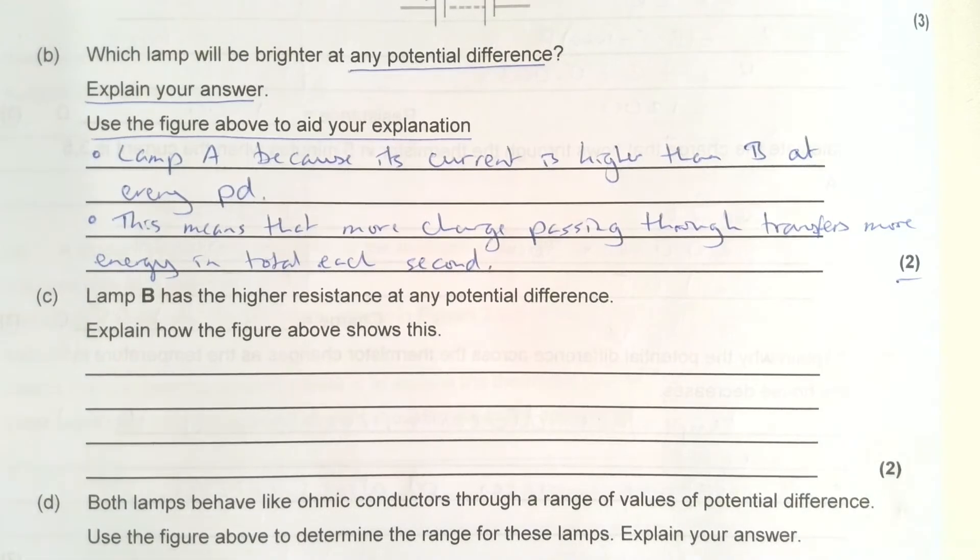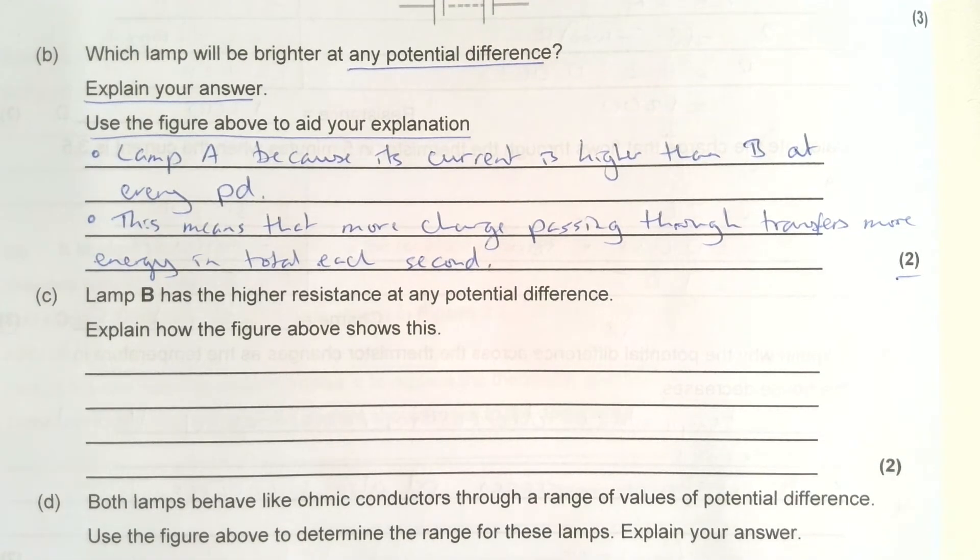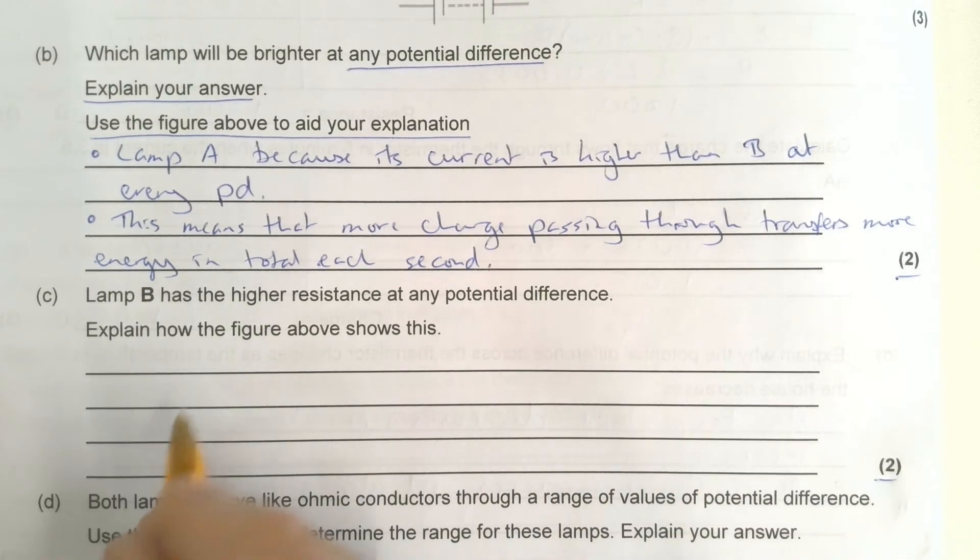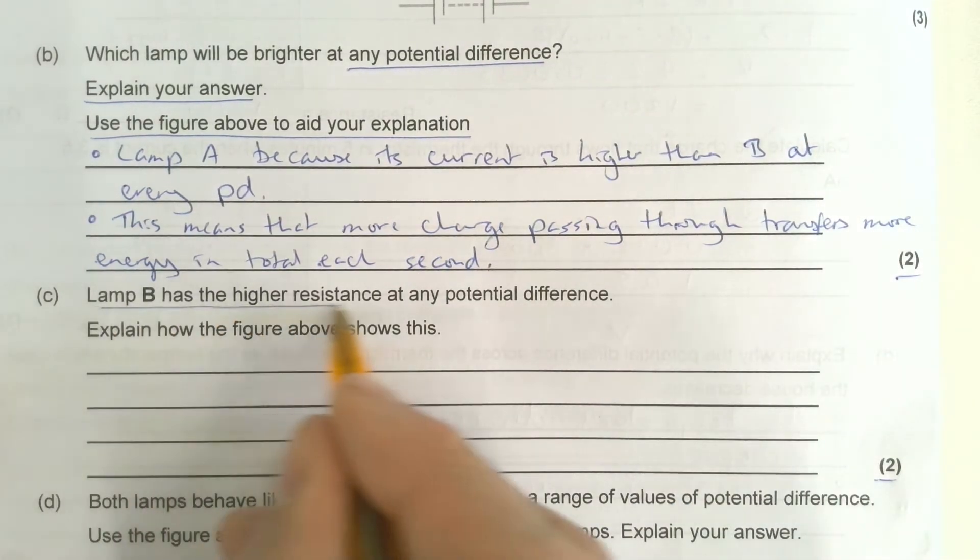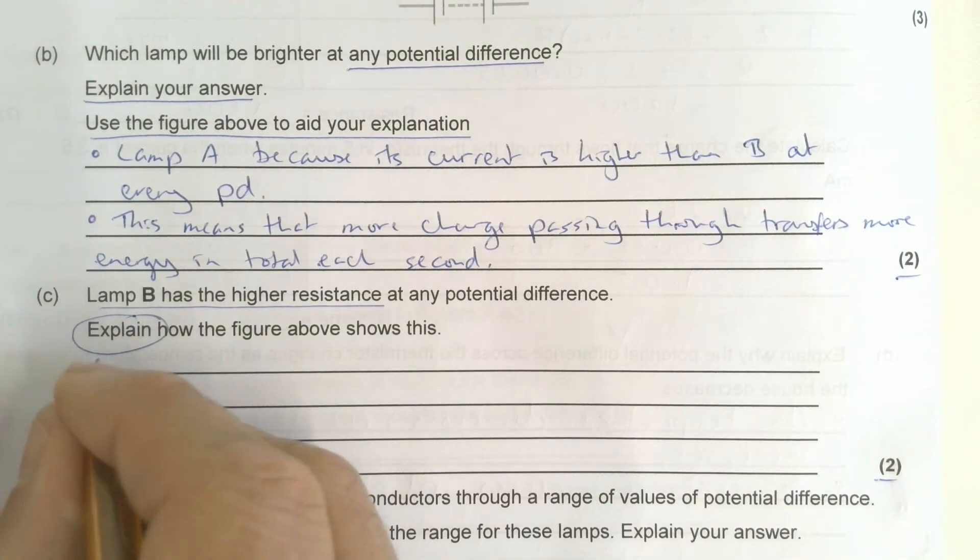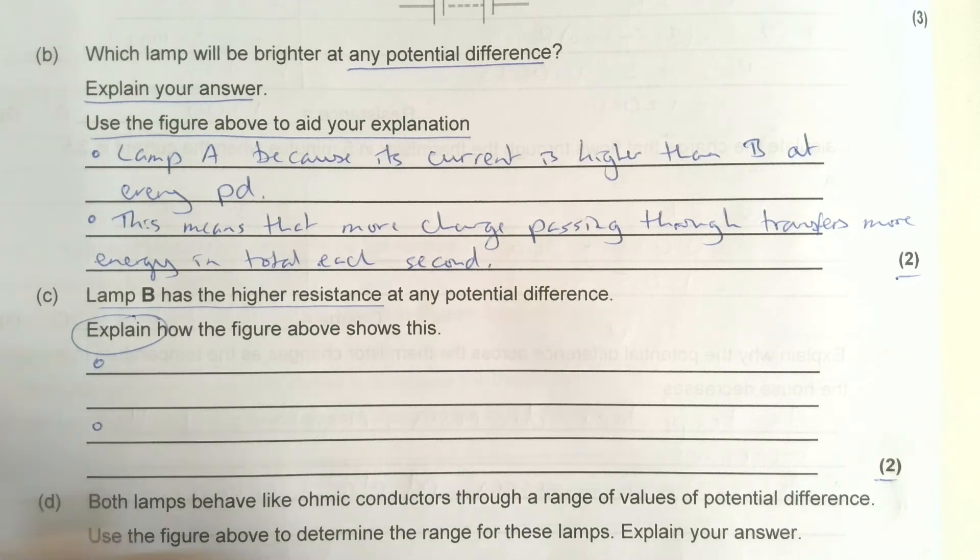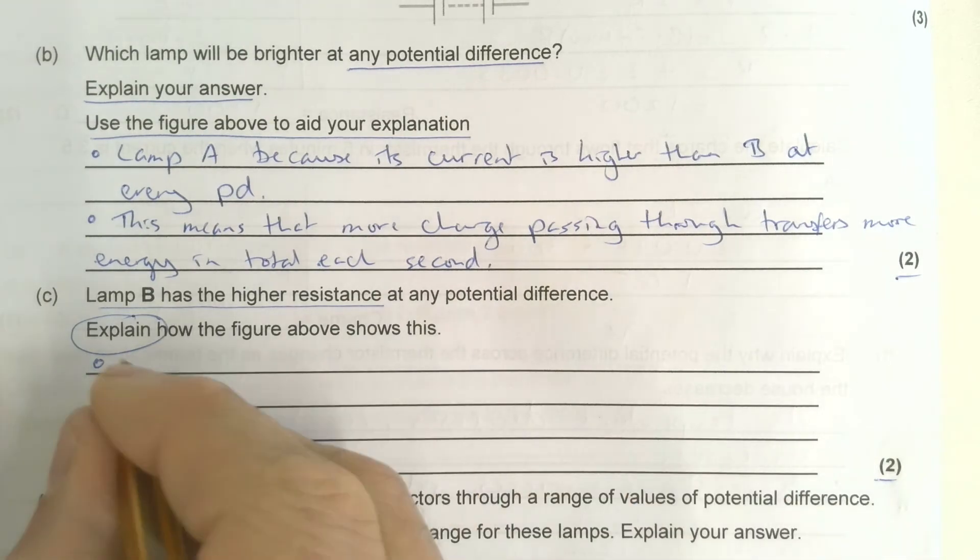Part C: Lamp B has the higher resistance at any potential difference. Explain how the figure above shows this. This is worth two marks as well. Lamp B has higher resistance, explain what the figure shows this. How does it show higher resistance?